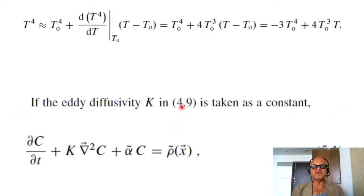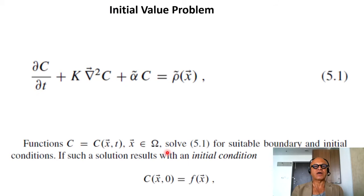If the eddy diffusivity is constant, then the equation becomes dc dt plus k grad squared c plus alpha tilde c equals rho tilde x, where this is a constant, and we can solve this on some domain. This is a function as well of x, the spatial coordinate, and is a function on the domain omega as well.